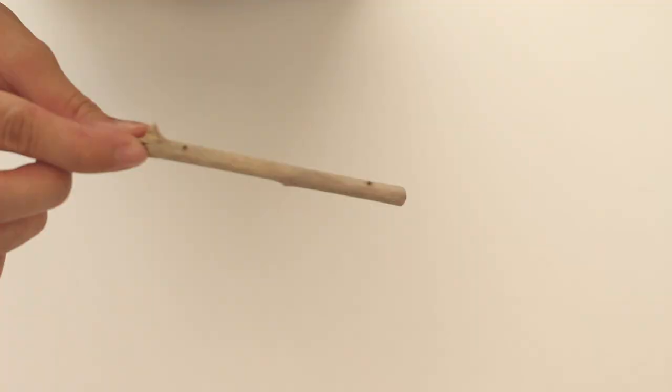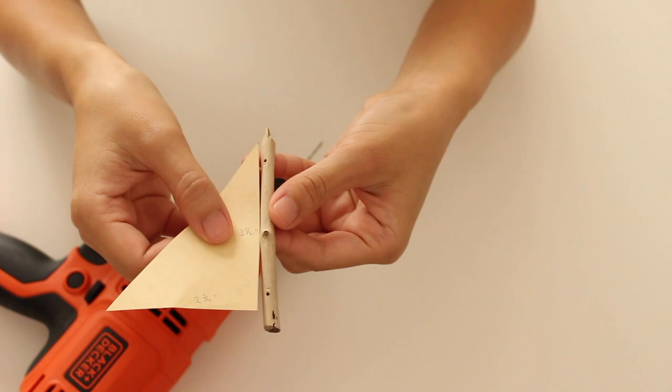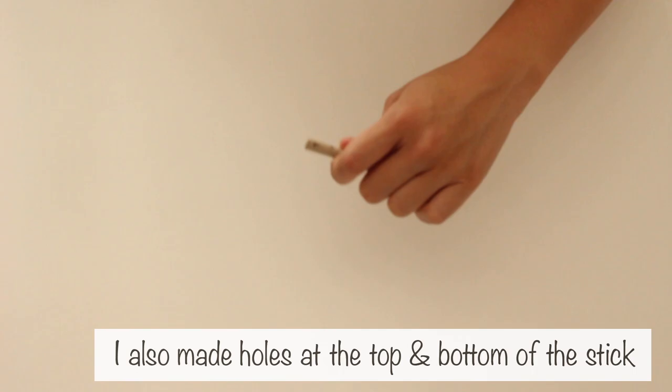Drill a couple of holes through the stick about one-fourth of an inch less than the ends of your sail template. Drilling the thicker driftwood seemed to take forever so I decided to create holes using a nail and hammer.